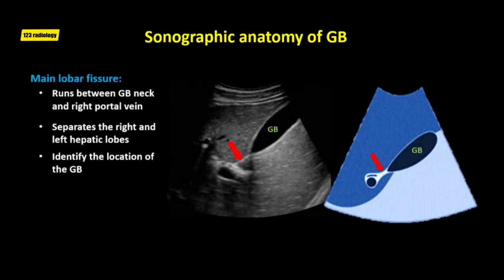The gallbladder neck has a constant relationship to the main lobar fissure and the portal vein. The main lobar fissure connects the right portal vein to the gallbladder neck, and the fissure can be traced between these two anatomical structures. This makes the fissure a useful landmark for locating a small contracted gallbladder or a gallbladder that is completely filled with stones.